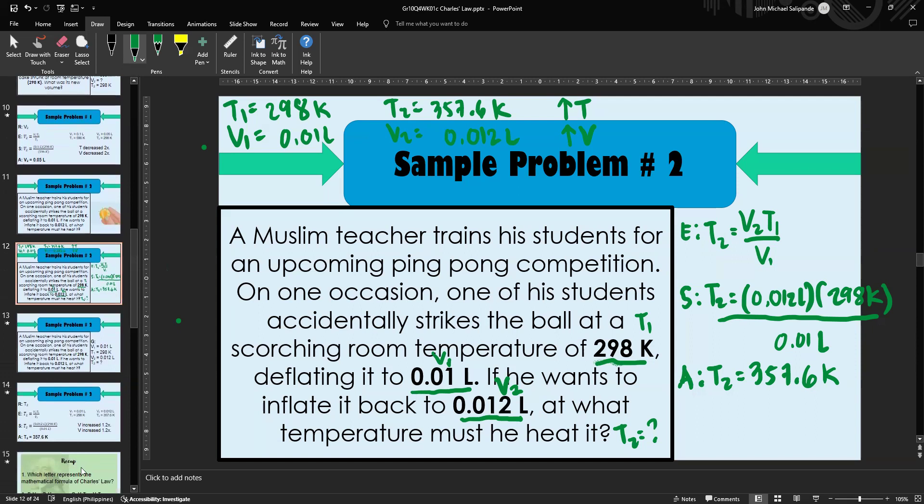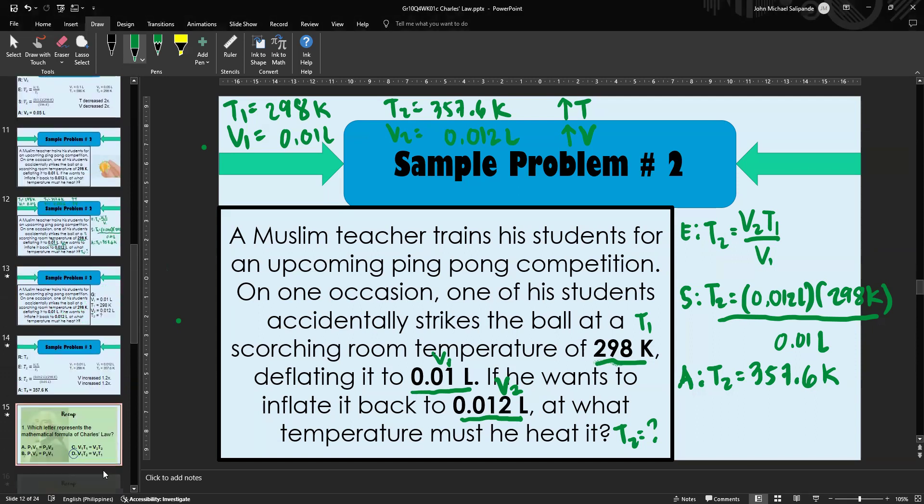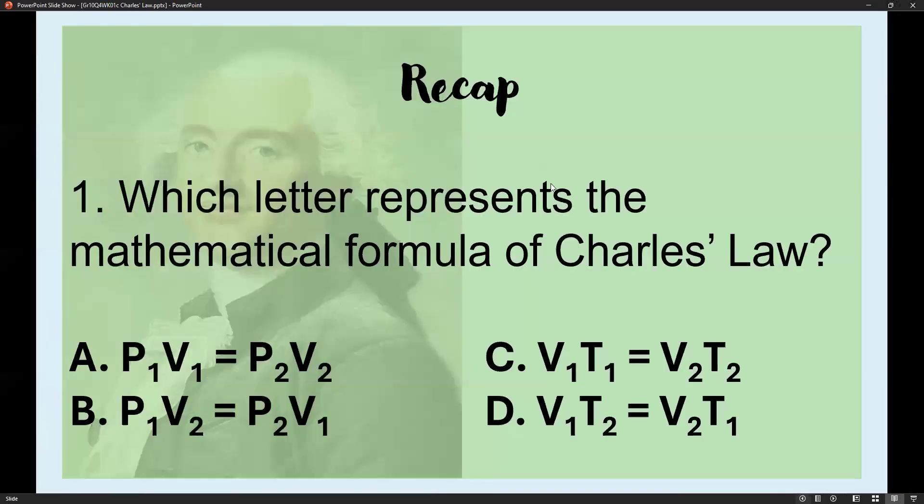Since we're technically done, it's time for our recap. Number one: Which letter represents the mathematical formula of Charles's Law? Remembering Charles's Law, we're comparing volume and temperature. That makes A and B incorrect. We're left with letter C: V₁T₂ = V₂T₁.